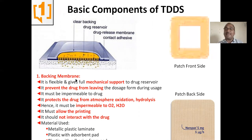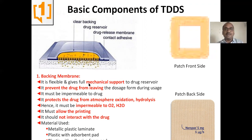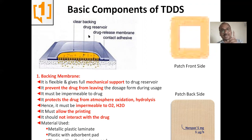The backing membrane is just like a back wall. It is very flexible — you can mold or change its shape however you want. It is not rigid like an iron plate; it is flexible like paper. It gives full mechanical support to the drug reservoir. Here you can find the drug reservoir, which is the second basic component I will explain in the next slide.